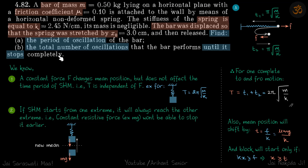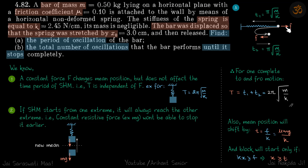One key concept: a constant force changes the mean position but does not affect the time period of SHM. We've seen this in the case of a hanging mass — a constant force mg acts on it, but the time period is still 2π√(m/k), independent of the constant force. So when the block is going towards the left with a constant frictional force, the time period of that half will be π√(m/k).